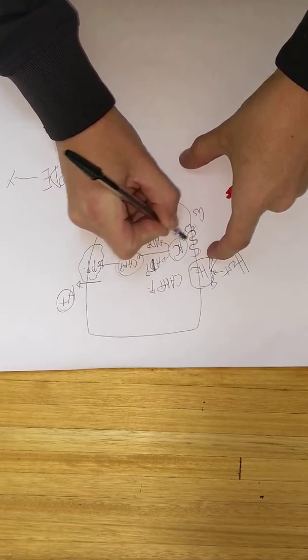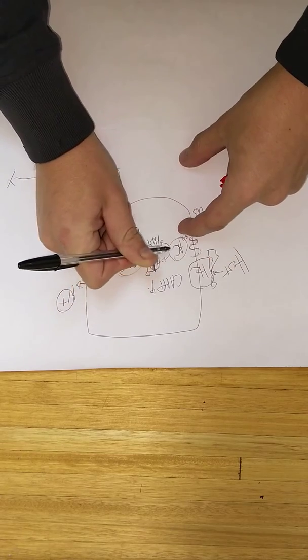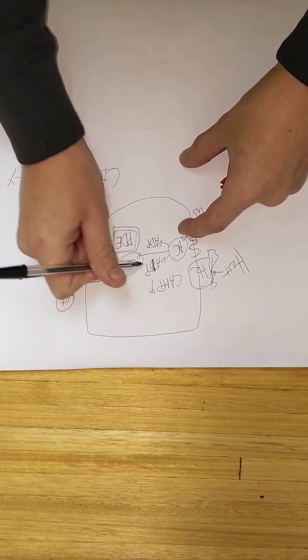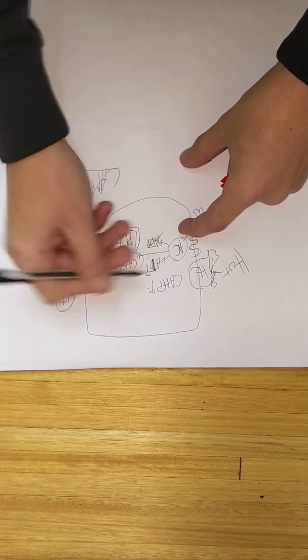This conformational change then stimulates the adenylyl cyclase. Adenylyl cyclase then creates cyclic AMP from ATP. Then you have ADP, it doesn't really matter.